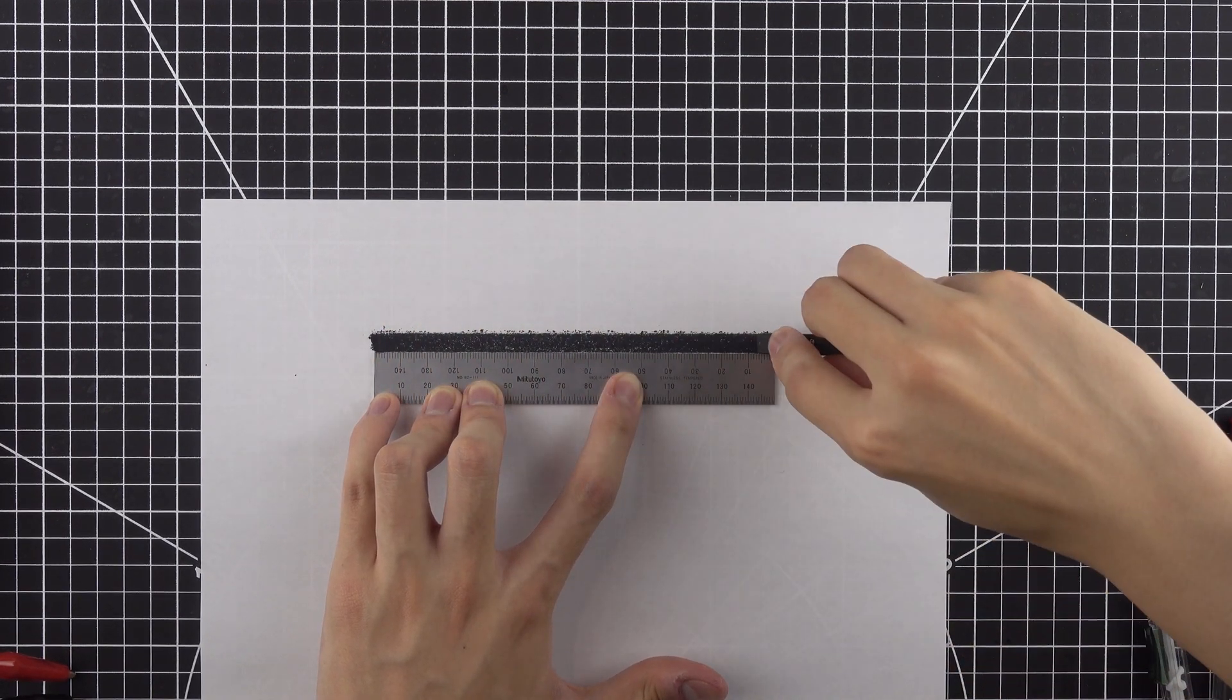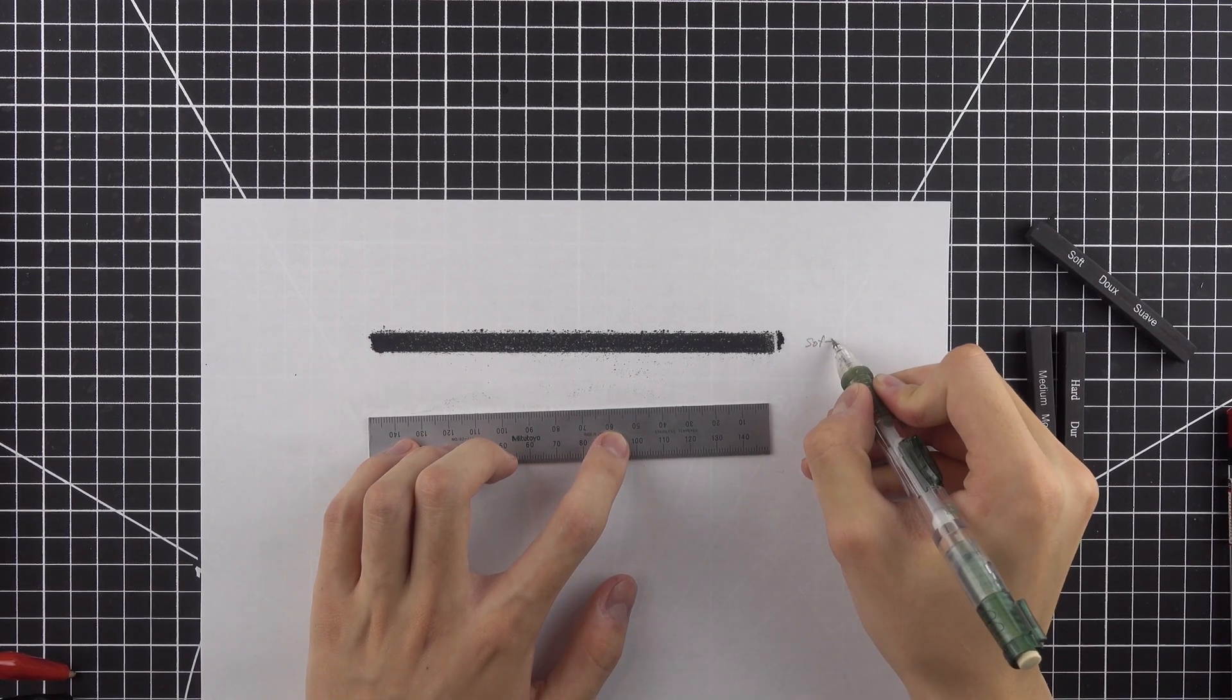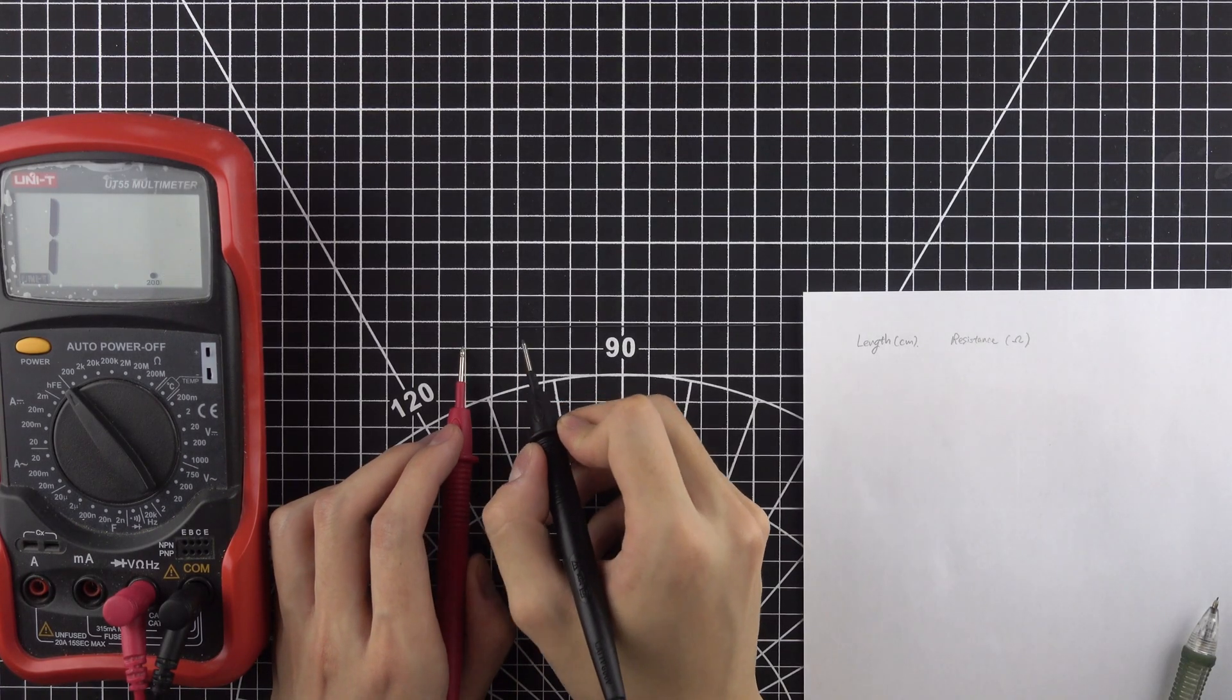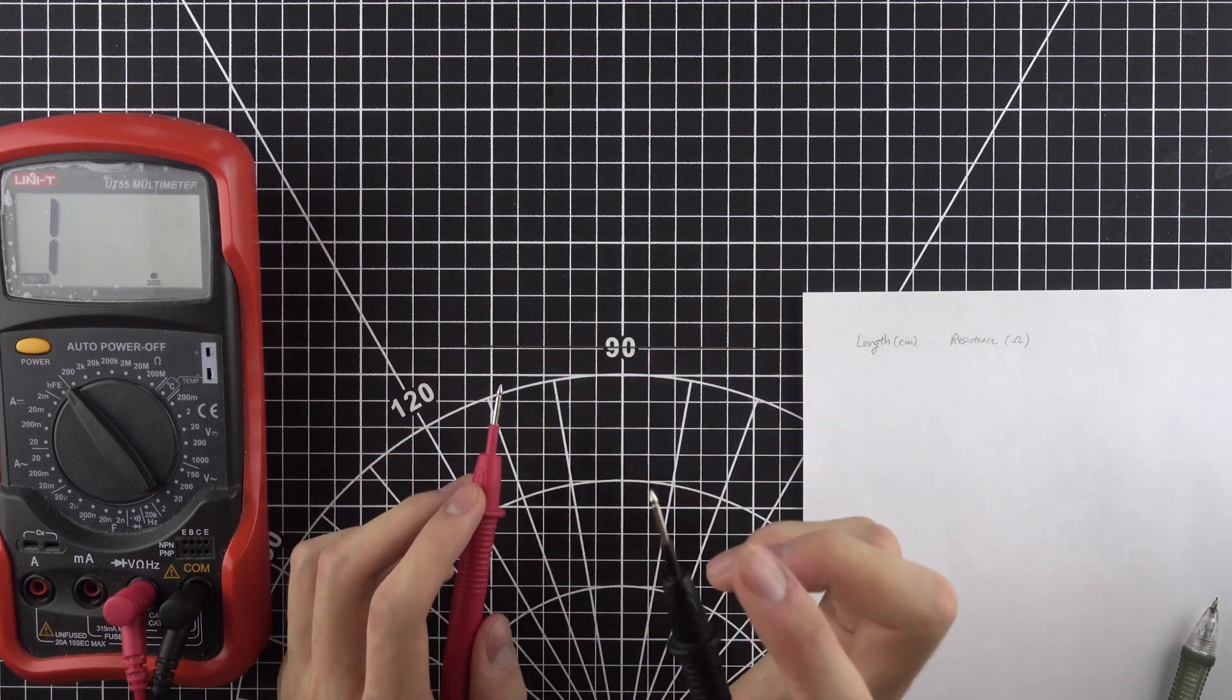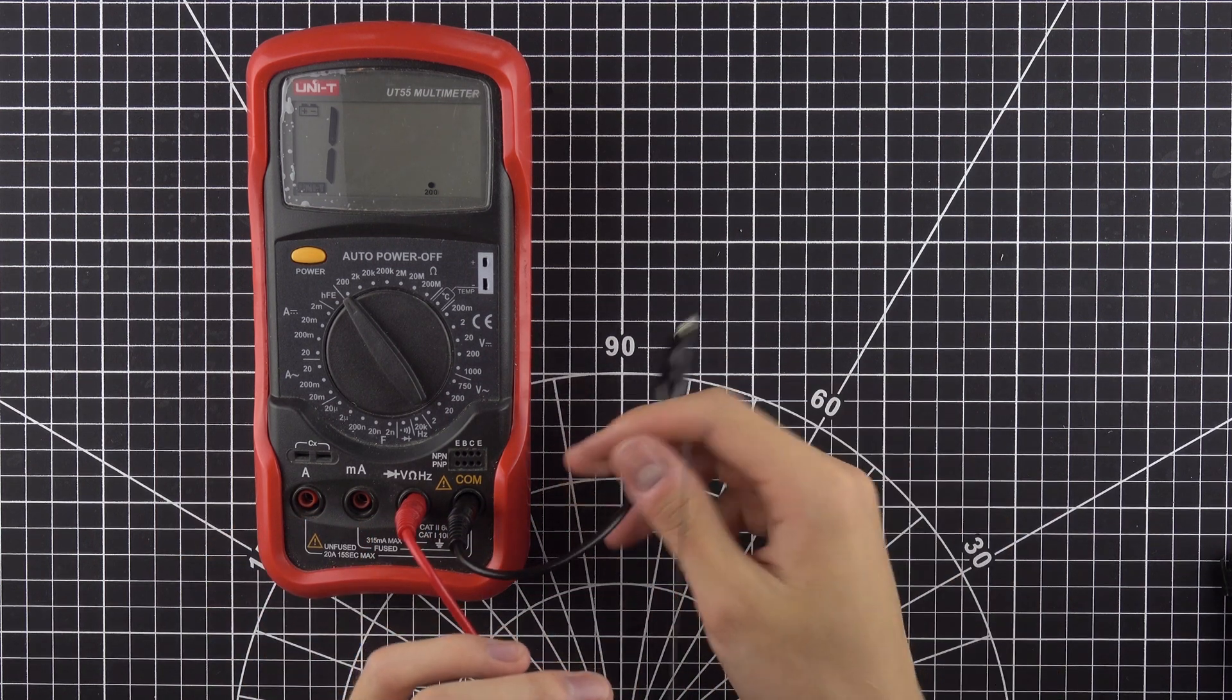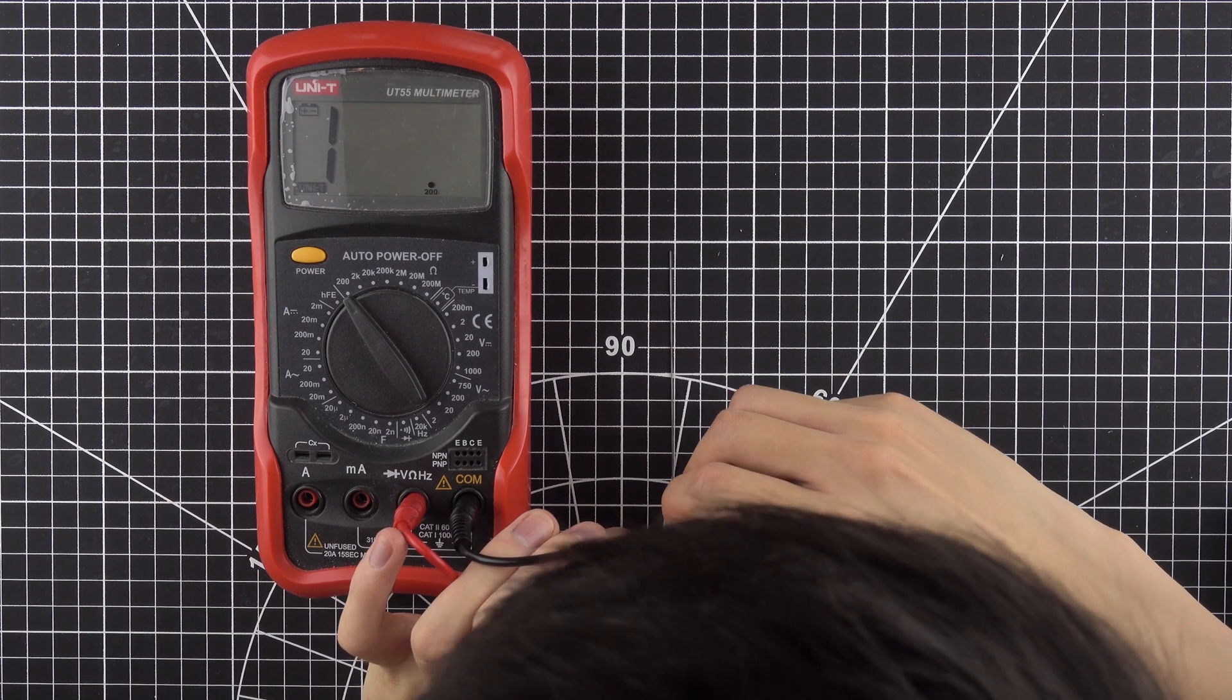Before we start to draw any lines, we should take a baseline reading of the resistance of pencil lead and the charcoal sticks. We will touch the multimeter probe to the 0.5 millimeter pencil lead with varying distance between the probes. Due to the circular cross section of the probes, it is very difficult to get a repeatable reading. I switched to alligator clip terminals in order to minimize the contact resistance.